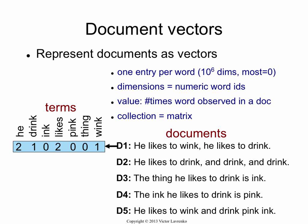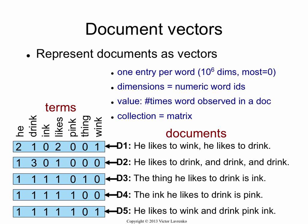In the previous lectures we talked about representing documents as vectors. Document D1 has two occurrences of the word 'he', two occurrences of the word 'likes', one occurrence of 'wink', and one occurrence of 'drink' — so that's its vector: two for 'he', one for 'drink', zero for 'ink', and so on. We can do the same for the rest of the documents in our little collection.